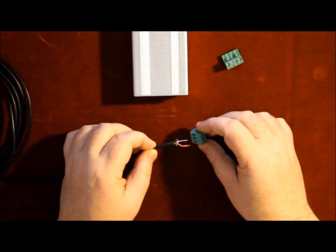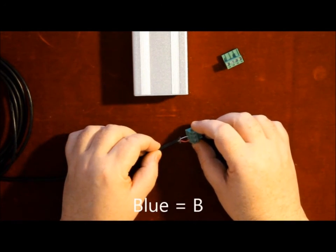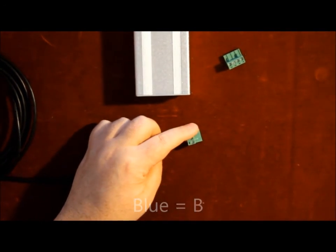The middle one is A which is white and the other is blue. Insert the wires and make sure you screw them down.